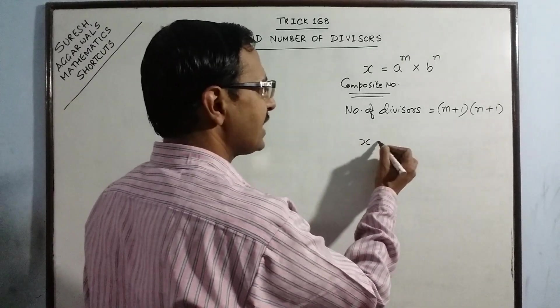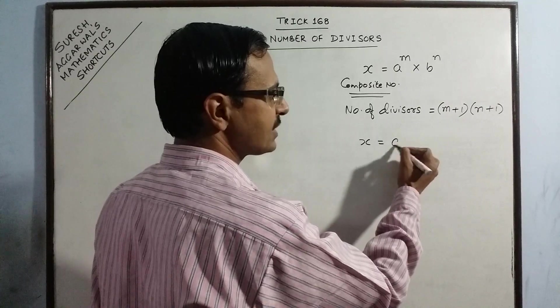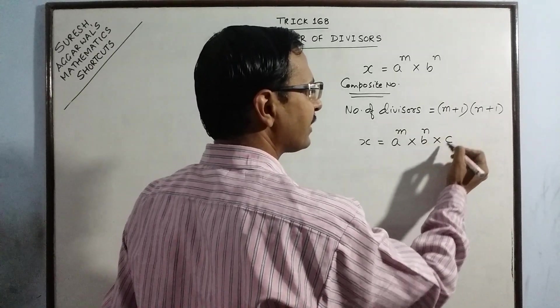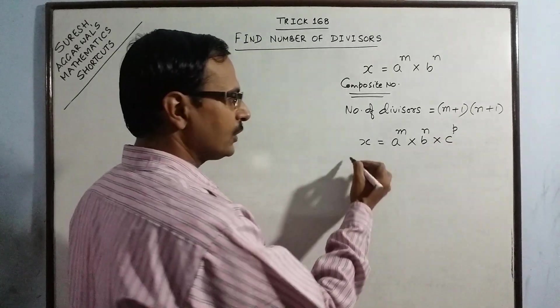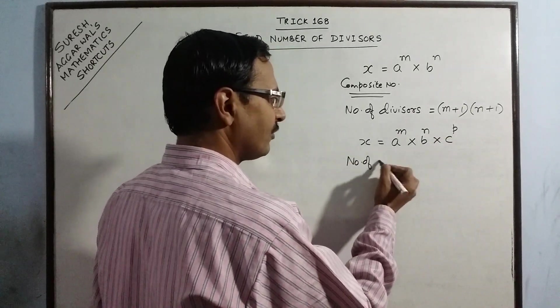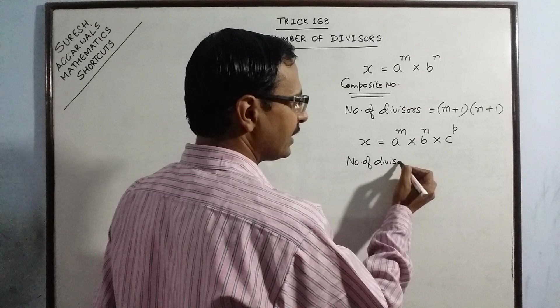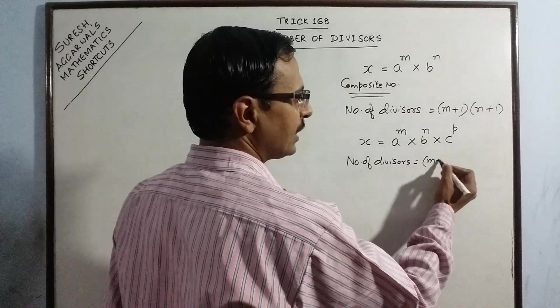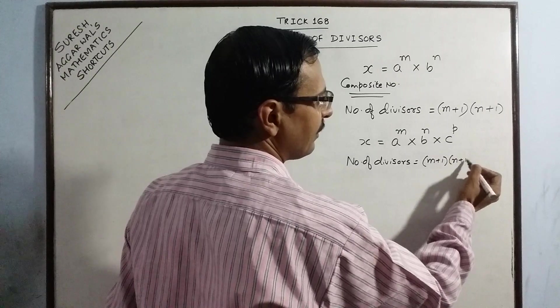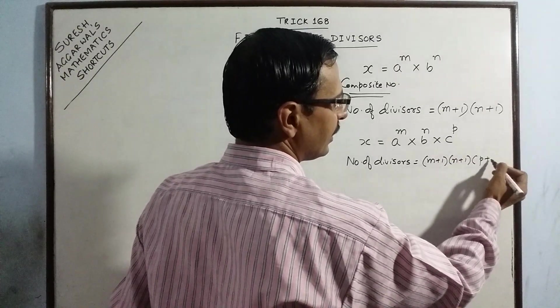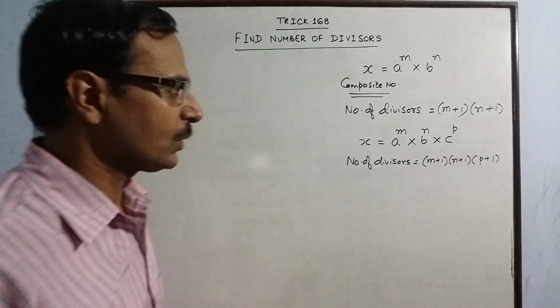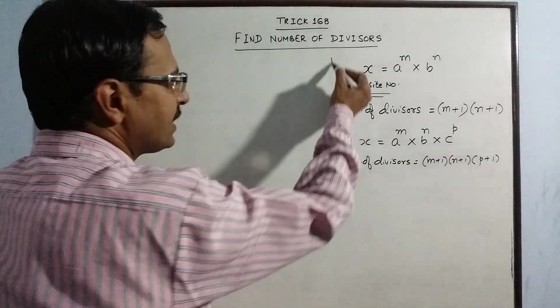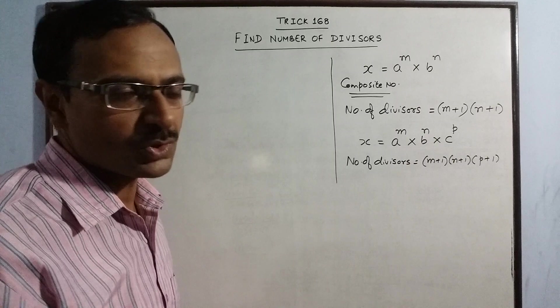Now suppose x has more than two factors say a, b and now we have another factor c. The number of divisors will be found out in the same manner as we have found here: m plus 1, n plus 1 and here we will have one more term p plus 1 multiplied together with the previous two terms. Now to understand this, let us solve some questions.